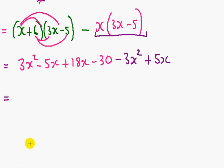We can collect the like terms now. So we've got 3x squared minus 3x squared. So those two can cancel out. Here you've got minus 5x, add 18x, then add 5x, which leaves us with 18x.